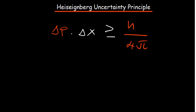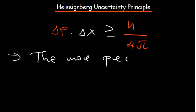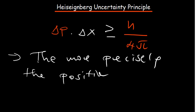The simplified form that you can remember is: the more precisely you know about any of the two, the more uncertain you are about the other one. So the more precisely the position is known...